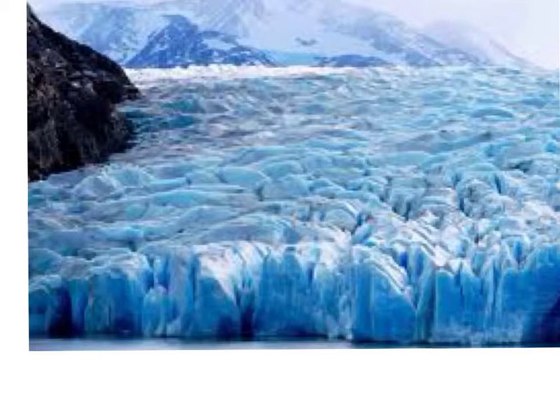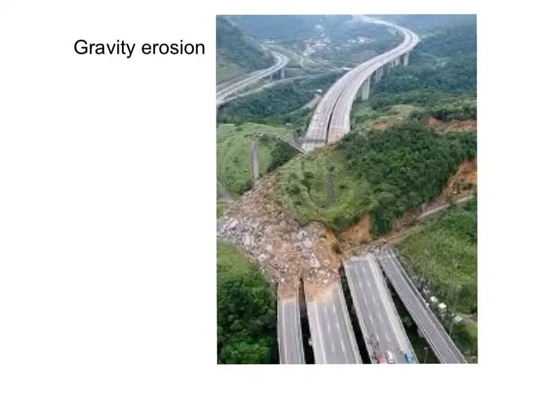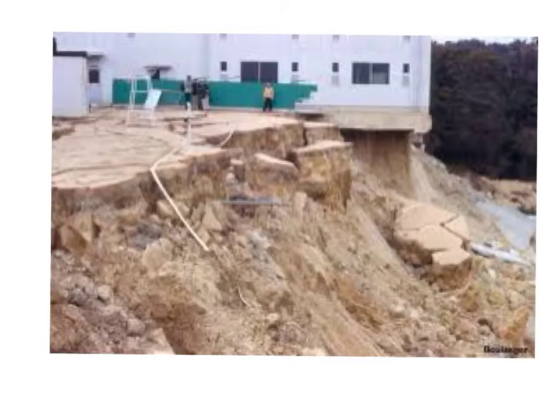When it melts, its contents are sometimes hundreds of miles away. Gravity Erosion. When earth gets weak from water or the removal of foliage, gravity pulls it towards the center of the earth. If it is past its angle of repose, it can create a landslide.